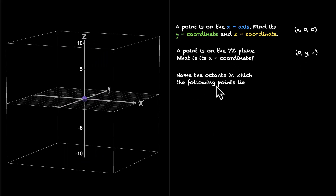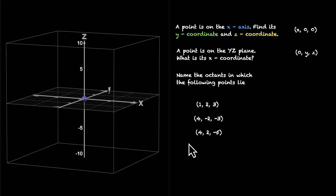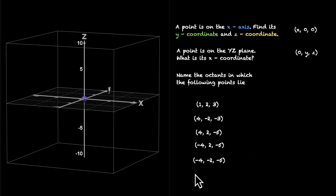Name the octants in which the following points lie. I'm going to list down five points: (1, 2, 3); (4, -2, -3); (4, 2, -5); (-4, 2, -5); and (-4, -2, -5). Pause the video, think about it — in fact, close your eyes when you're visualizing. Where are these points lying? In which octant are these points lying?